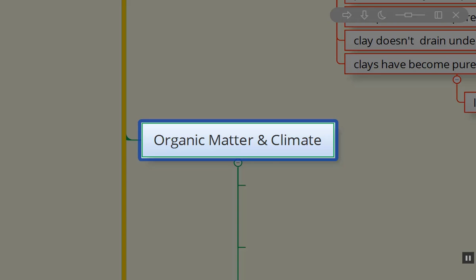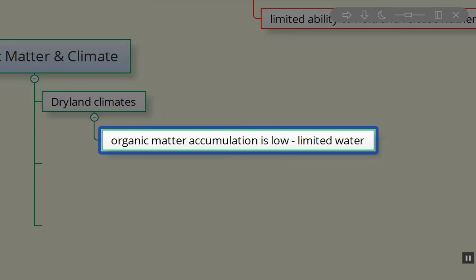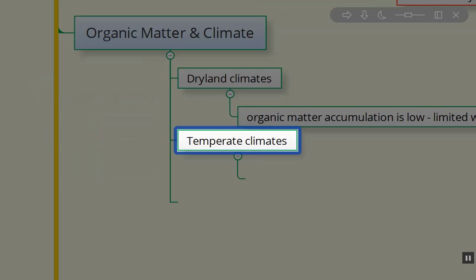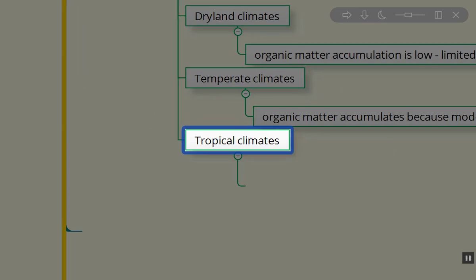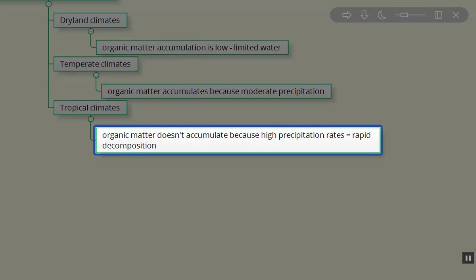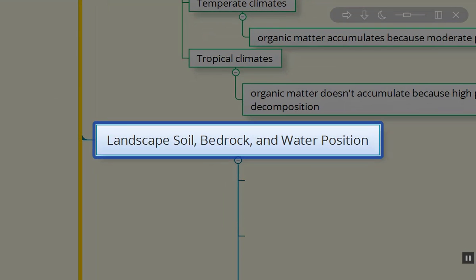What about organic matter and climate? Well, in the dry land climates, organic matter accumulates very slowly because there's very limited water supply. It's an arid, very dry environment. As things die, they don't decompose very rapidly. Whereas in temperate climate, we have moderate precipitation and temperatures. And therefore, organic matter decomposes at a moderate rate. Whereas in a tropical climate, organic matter doesn't accumulate because of the high precipitation and high temperature causes rapid decomposition. Things decompose so rapidly that it's taken right up by the plants and most of the organic material, the nutrients, are actually in the plant material itself above the soil.